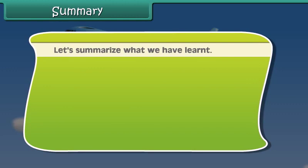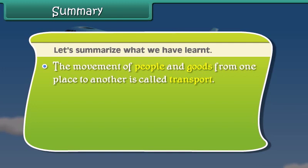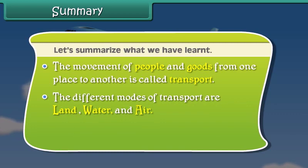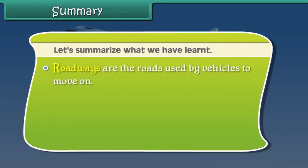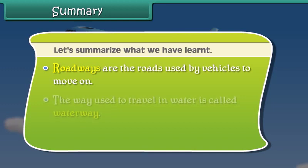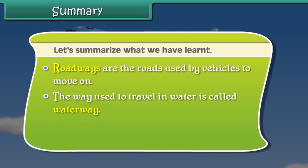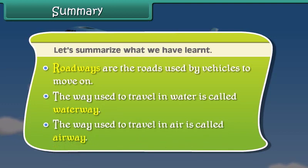Now friends, let's summarize what we have learned. The movement of people and goods from one place to another is called transport. The different modes of transport are land, water and air. Railways are the road tracks over which trains run with the help of wheels. Roadways are the roads used by vehicles to move on. The way used to travel in water is called waterway and the way used to travel in air is called airway.